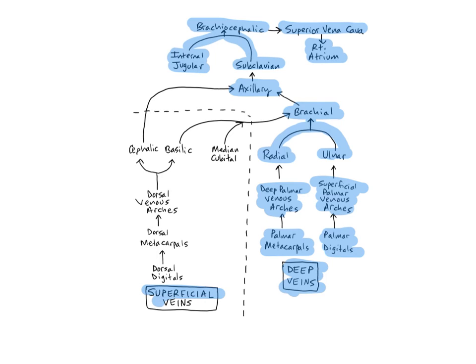The superficial veins of the upper limb begin with the dorsal digital veins, which drain blood from the fingers into the dorsal metacarpal veins, which carry blood into the dorsal venous arches, also called the dorsal venous veins. The cephalic veins are long superficial veins that begin on the lateral aspect of the dorsal venous arches and curve around the radial side of the forearms to the anterior surface, then ascend through the entire arm along the anterolateral surface. They end where they join the axillary veins just below the clavicles. The cephalics drain the skin and superficial muscles of the lateral aspect of the upper limb.